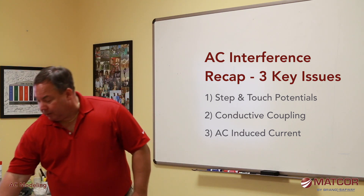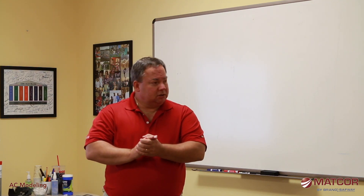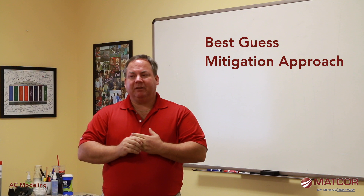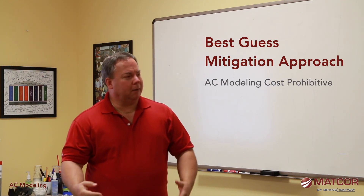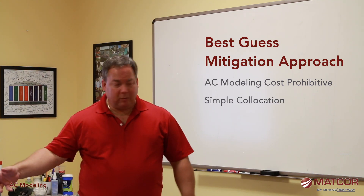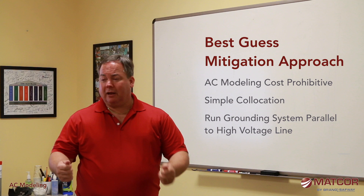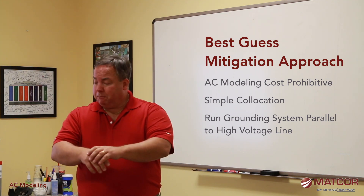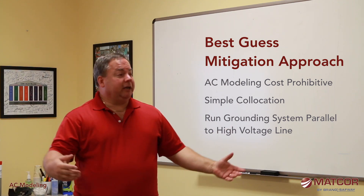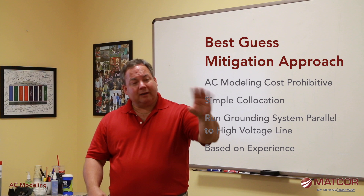In some instances we can do a best-guess mitigation approach — it's just not worth the effort to put everything into a model. For example, a simple one-mile co-location where the pipeline runs parallel to a high voltage line and then leaves — I've measured AC pickup and I'm just going to put grounding in from A to B and be done with it. It's over-designed, but the cost of modeling would exceed the cost of just fixing it.